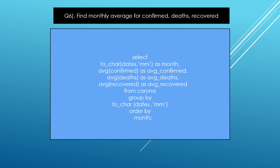The next question is: find the monthly average for confirmed, deaths, and recoveries. I find the average of confirmed, dates, and recoveries. I used MONTH(dates) declared as month, AVG(confirmed) as average_confirmed, AVG(dates) as average_dates, and AVG(recover) as average_recover from the table, grouped using GROUP BY.